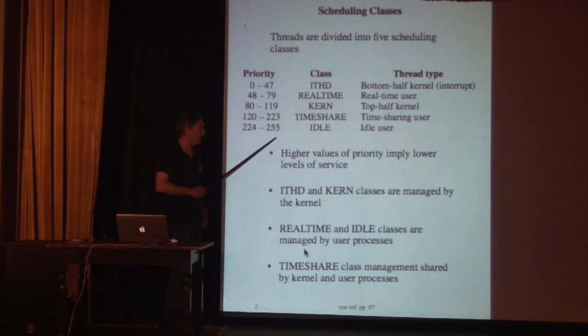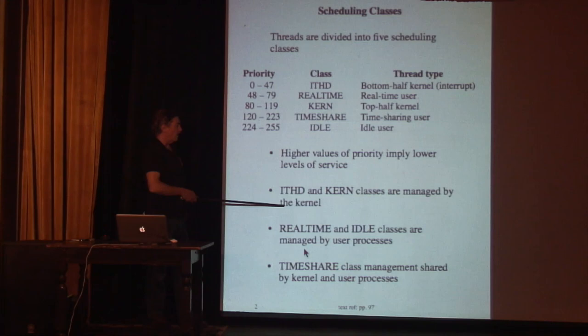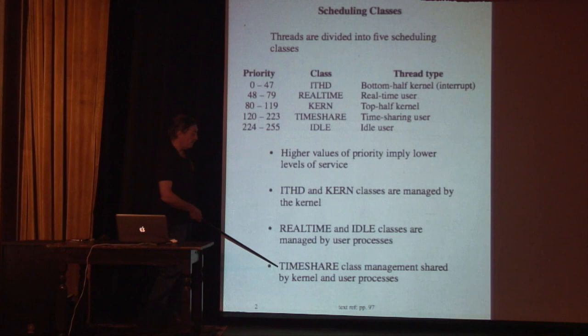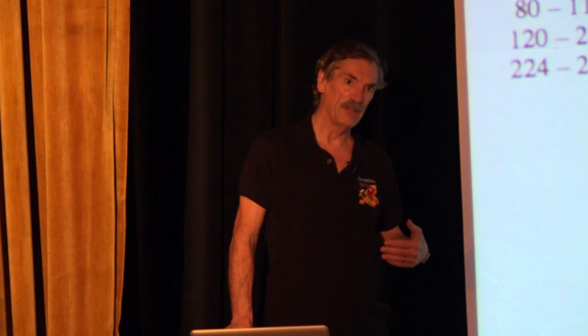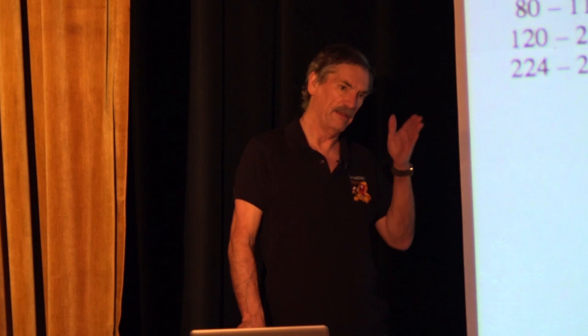The numeric priorities run from 0 to 255. Higher values imply lower levels of service — 0 is the highest priority and 255 is the lowest. The iThread and kernel classes are managed by the kernel. The real-time and idle priorities are managed by user processes, which simply set them and the kernel works with whatever they're set to. The timeshare class is shared between the kernel and user processes — users can influence these via the nice value, but the kernel selects the base priority.